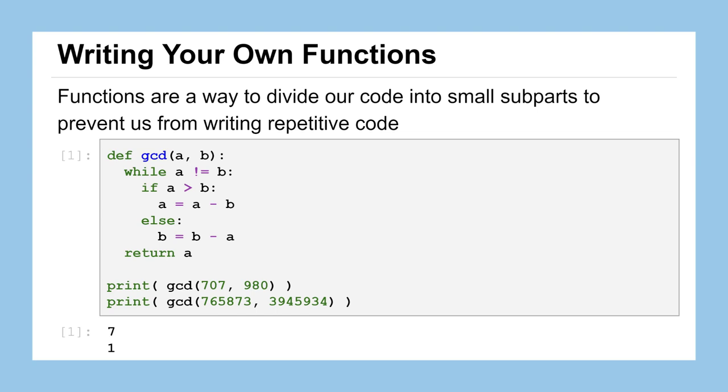So we're going to have different inputs but the same operations, which is a great choice for using functions. We're going to learn how to write our own functions as a way to divide our code into smaller subparts that will help us from avoiding writing repetitive code over and over again. We can see here an example of the GCD function. We can call it down here at the bottom two lines of the code and then print the output of those functions. And we're going to dig in now to see exactly how we would write our own function from start to finish.